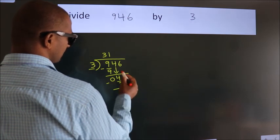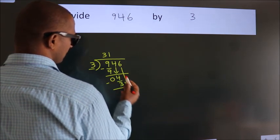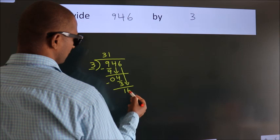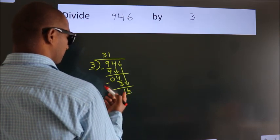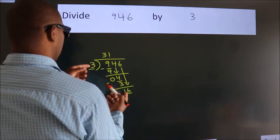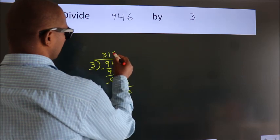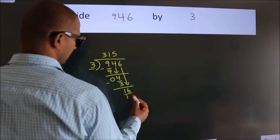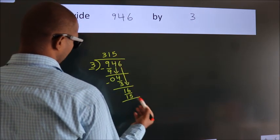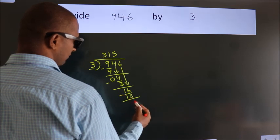After this, bring down the beside number. So 6 down, so 16. A number close to 16 in 3 table is 3 times 5 is 15. Now, we subtract, we get 1.